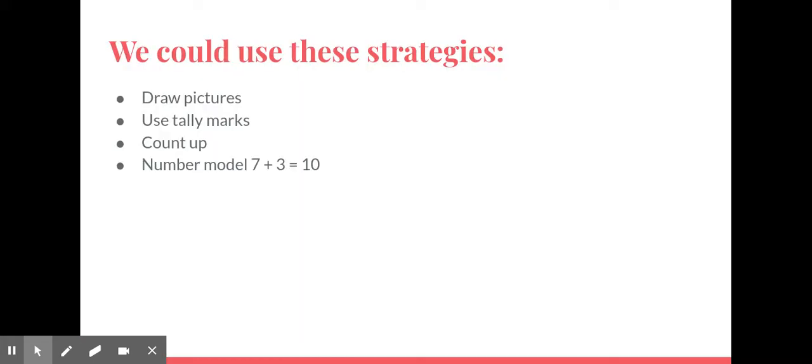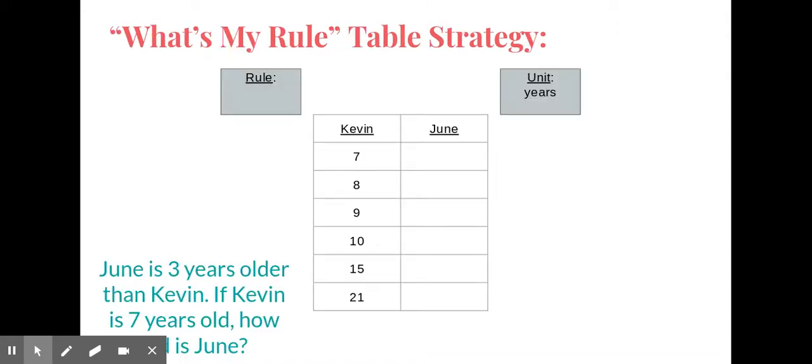Here are some strategies that you may have chosen. You could draw a picture, use tally marks, count up, or even use a number model like seven plus three equals ten. We're going to talk about a new type of strategy that you can use, and it's called using a table. Sometimes it's also called a 'what's my rule' or a function machine strategy.